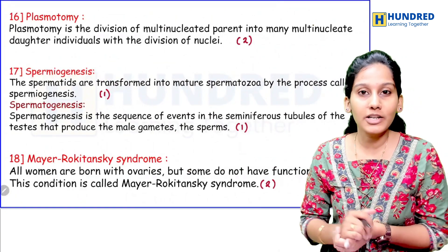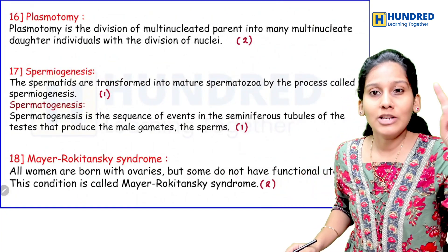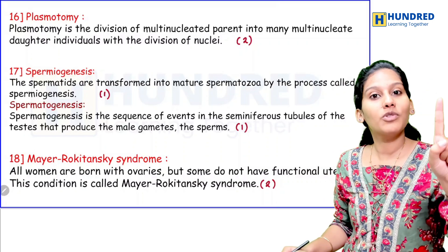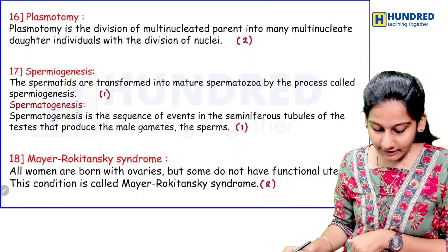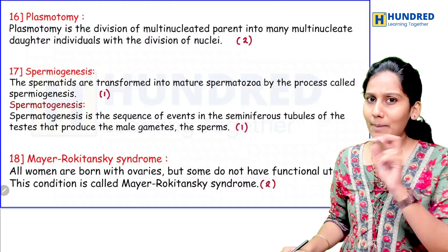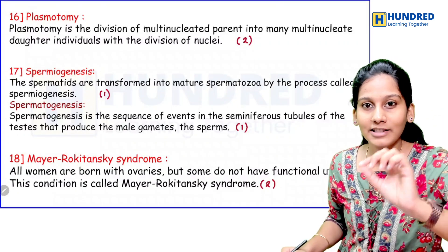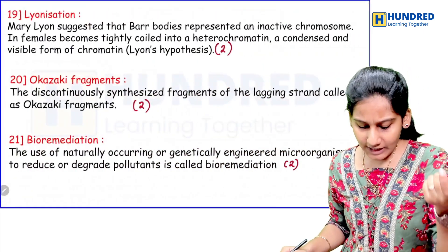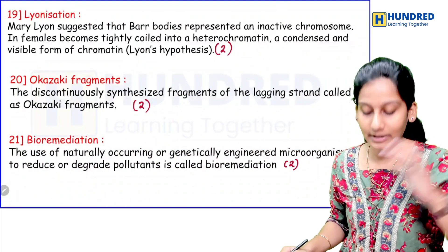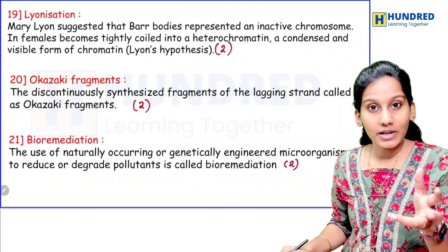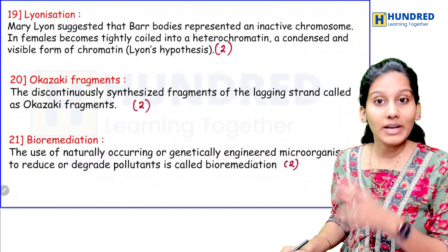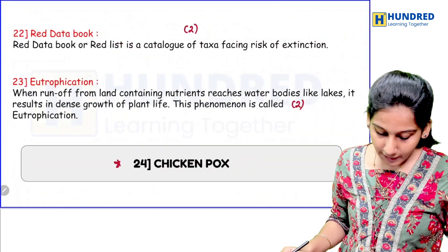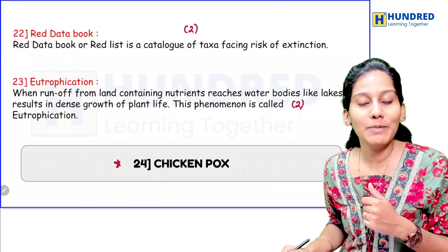So we have two marks in the first chapter — two marks for spermatogenesis and spermatogenesis. And then we have two marks for Mayer-Rokitansky syndrome, which is easier to score. If you have linearization and bar bodies, you will get the marks — two marks for bar bodies, two marks for fragments. Bio-remediation, red data book, and eutrophication are also important.